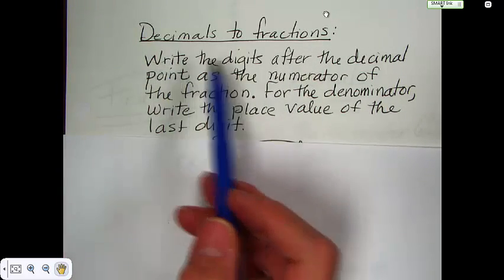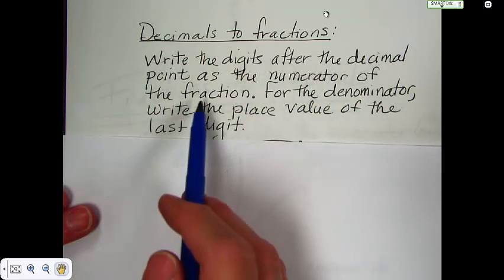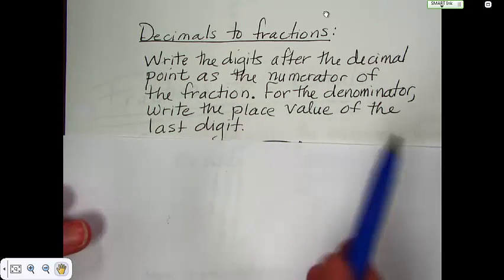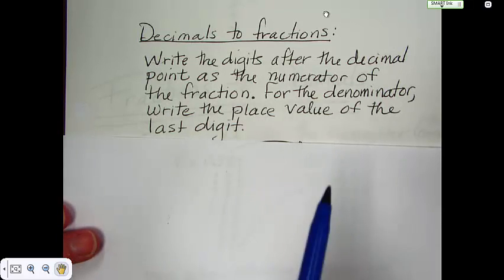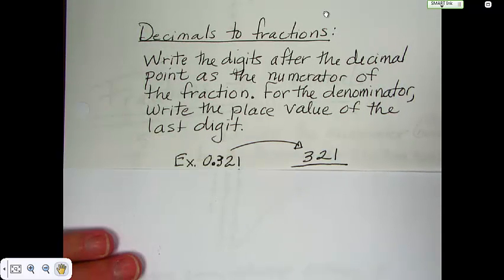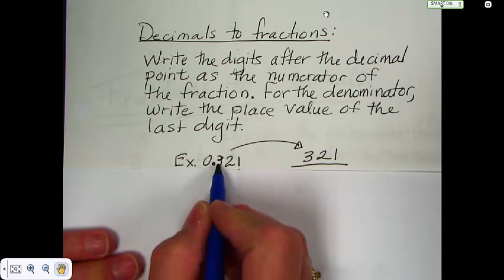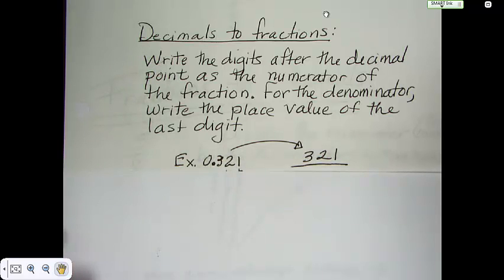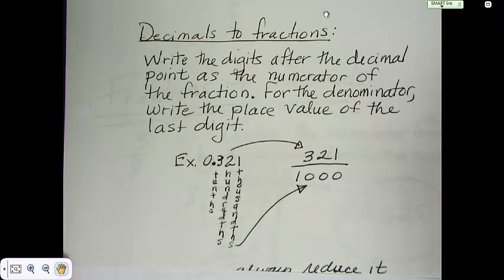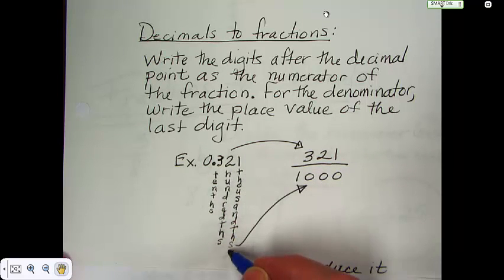So write the digits after the decimal point as the numerator of the fraction. For the denominator, write the place value of the last digit. Let's take a look at this number. We have 0.321. What's the place value? Tenths, hundredths, thousandths. So it is thousandths is the place value.